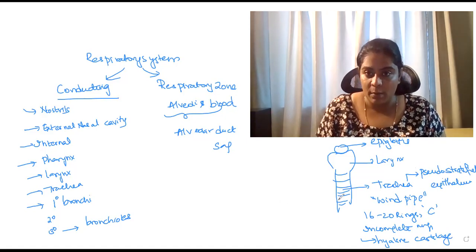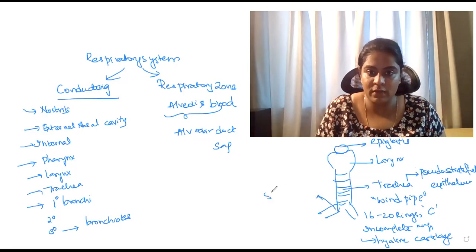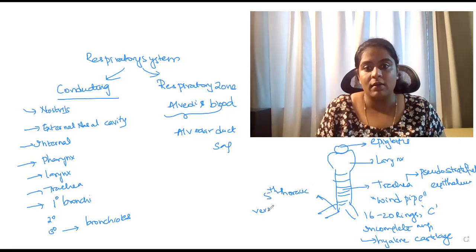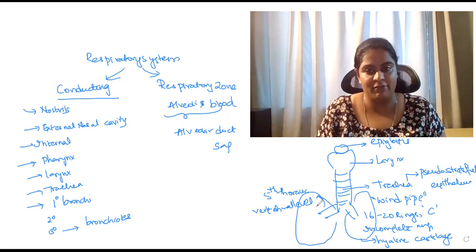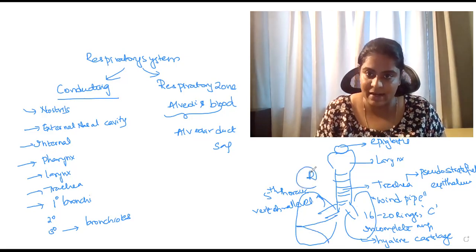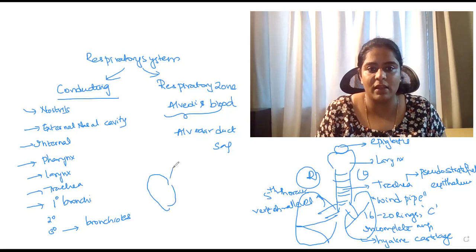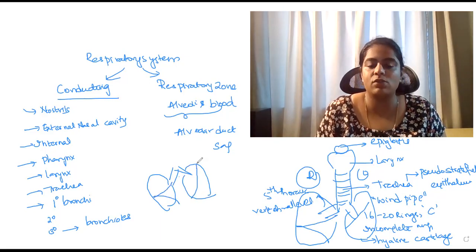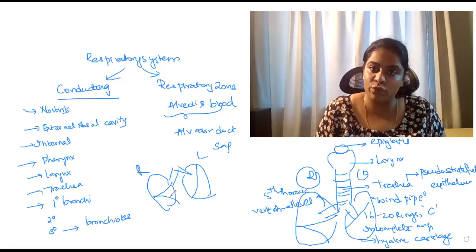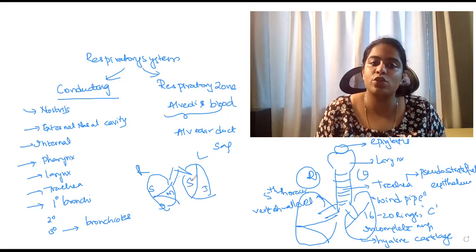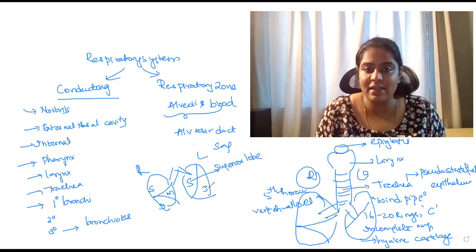The trachea divides into the primary bronchi at the fifth thoracic vertebral level into the right lung and the left lung. In the right lung there are two fissures, whereas in the left lung there is only one fissure. Because the right lung has two fissures, it is divided into three parts: the superior lobe, middle lobe, and inferior lobe. The left lung, having one fissure, is divided into just the superior lobe and inferior lobe.